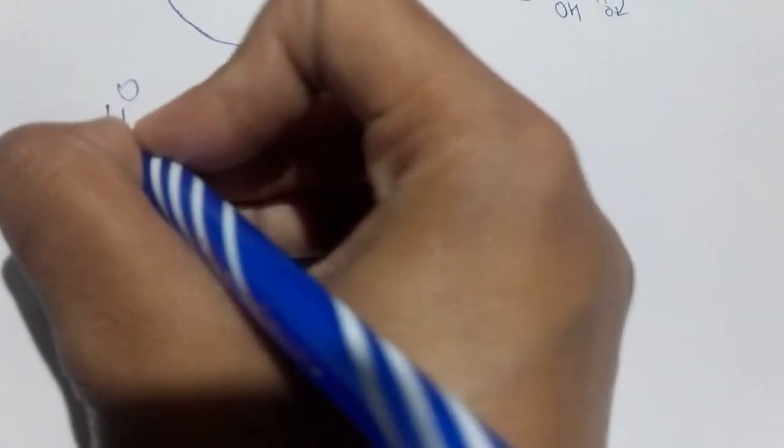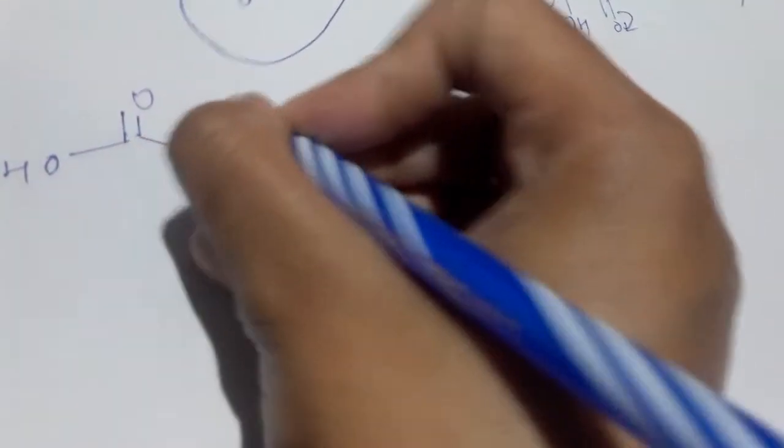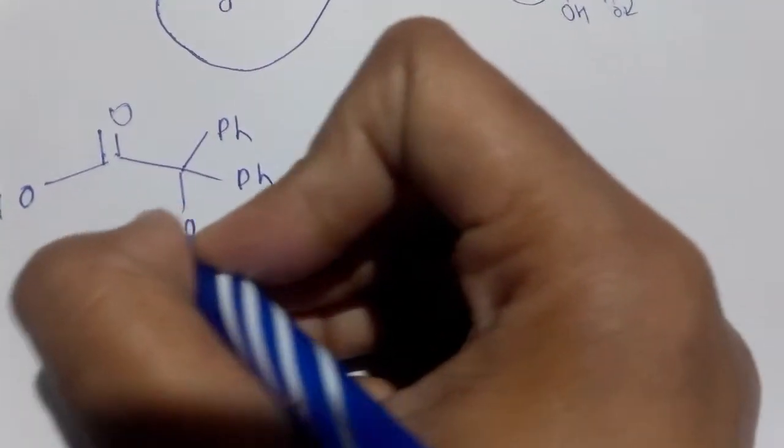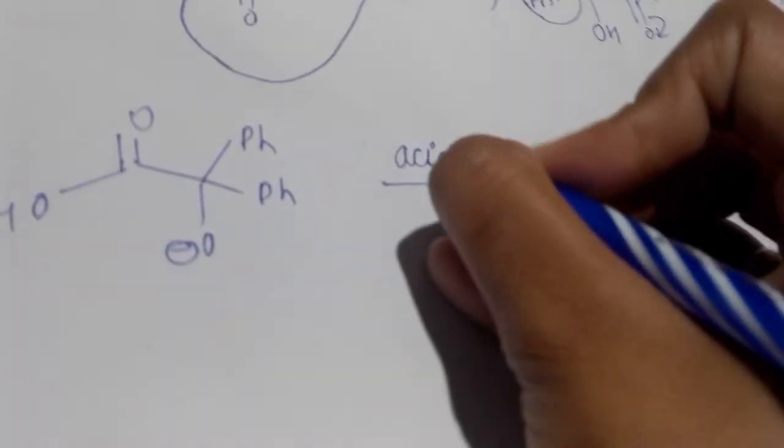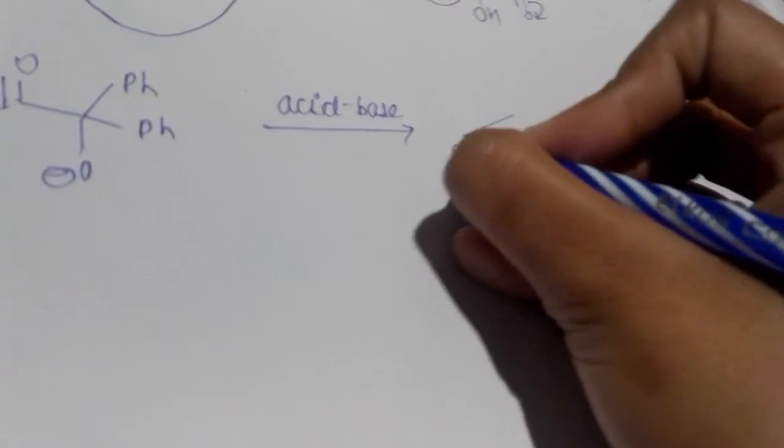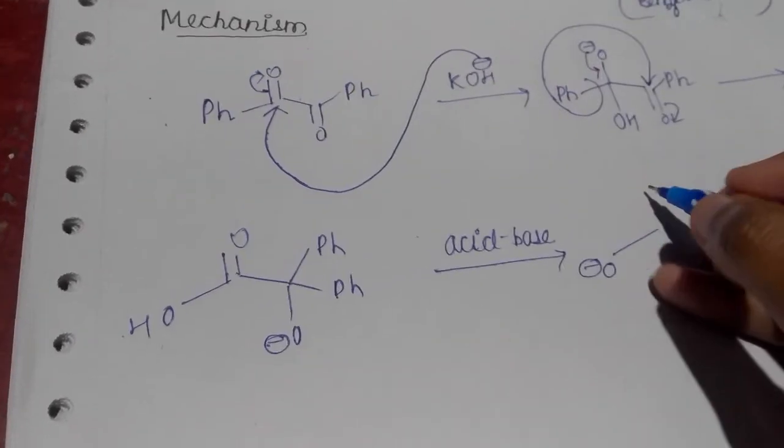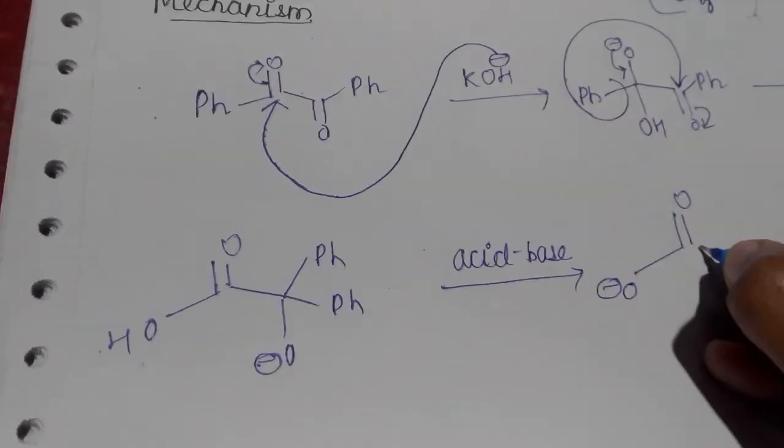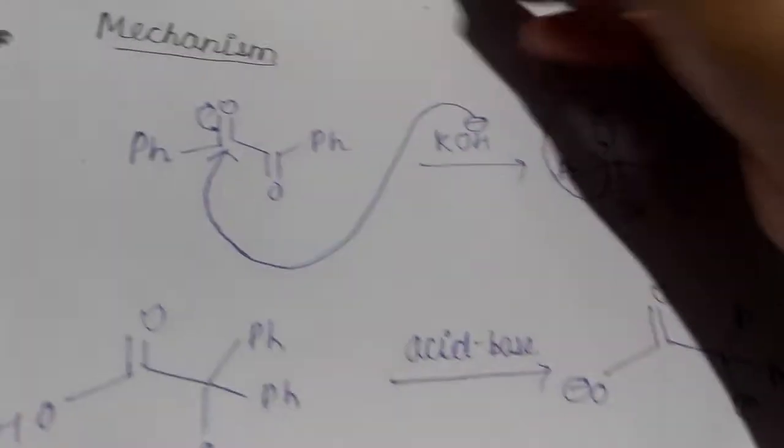So after this what happens is this is double bond now and then we have Ph here and then we have this phenyl and this is oxygen negative. And then you know that acid-base reaction will definitely take place, so when acid-base reaction takes place within itself, it takes away this hydrogen from there and then it gets converted to OH.